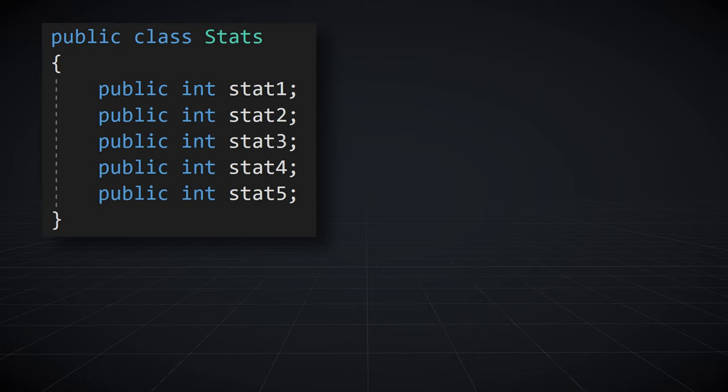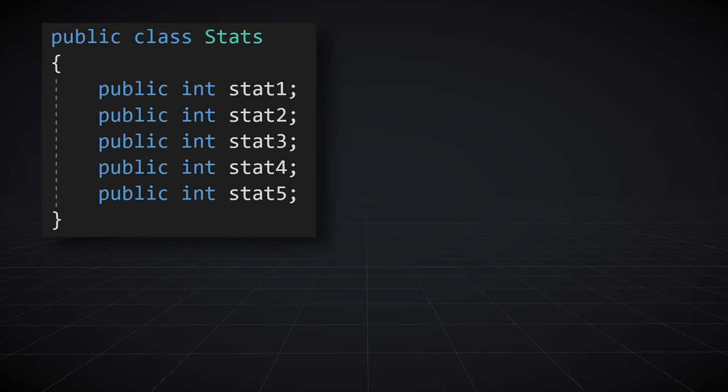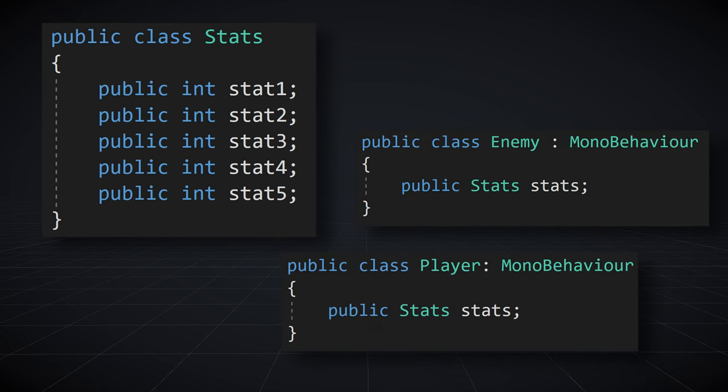A good way to implement stats could be to create a non-MonoBehaviour class, call it Stats, and then have a public field for each type of stat that's going to be needed in the game. Then any class that needs stats — whether that's an enemy, a player, armor, weapons, or whatever — can have a variable of that Stats type and you're generally good to go. As an added bonus, this is a good way to enforce some composition over inheritance structure in your project.